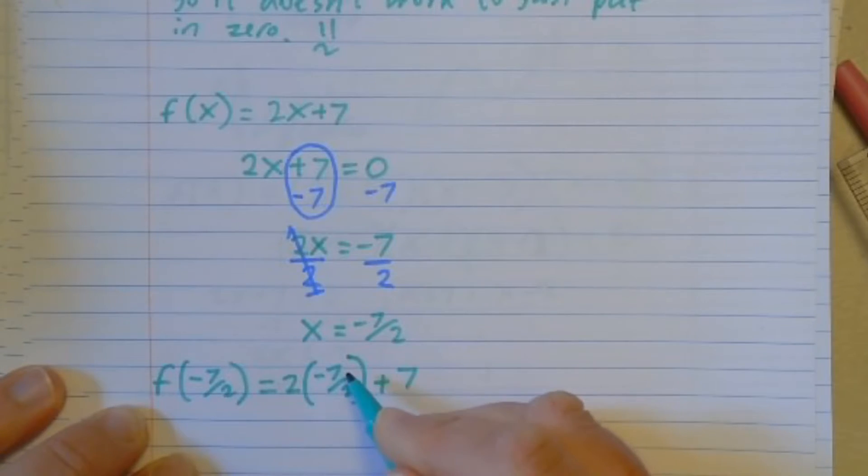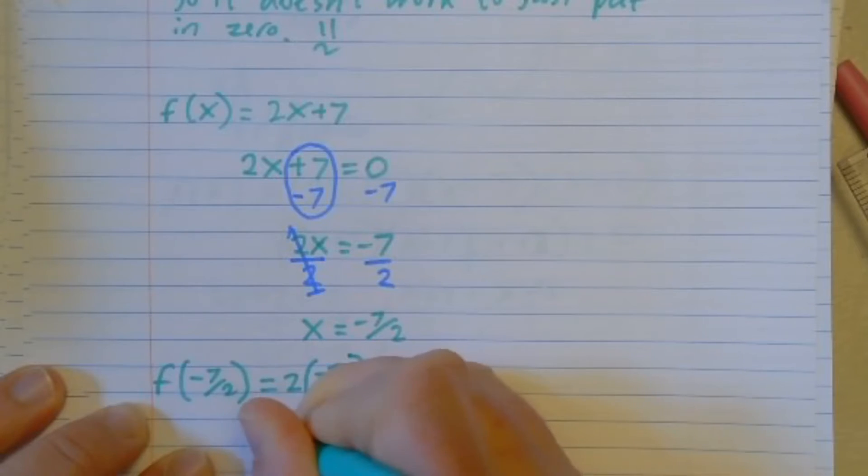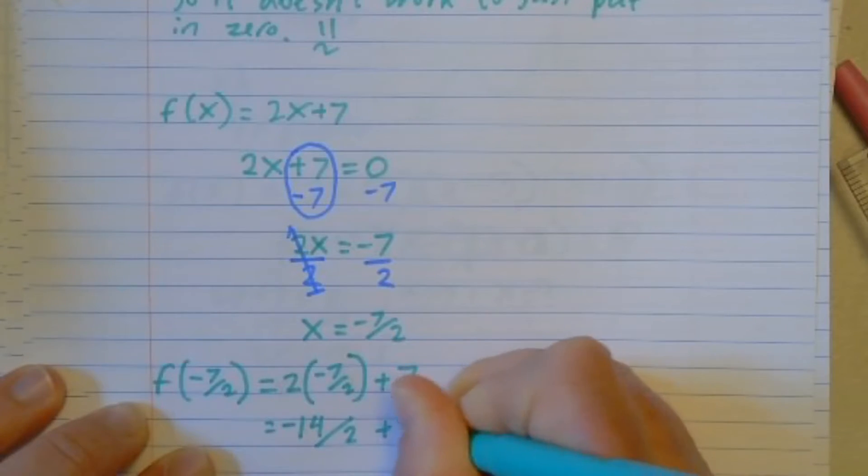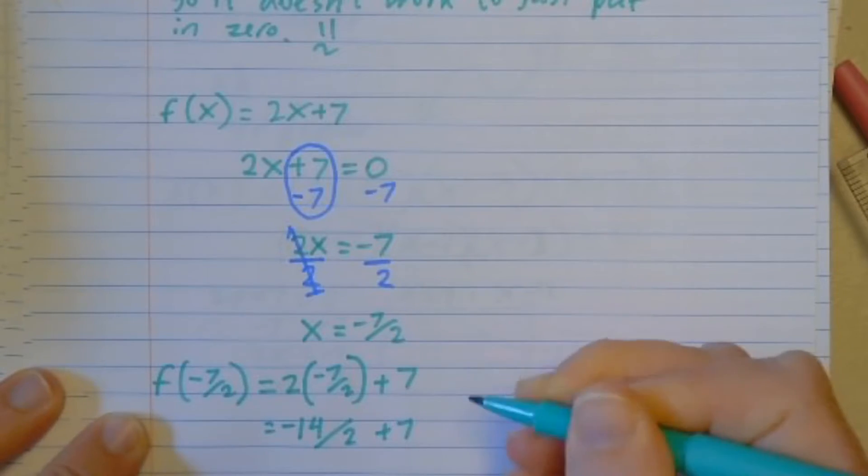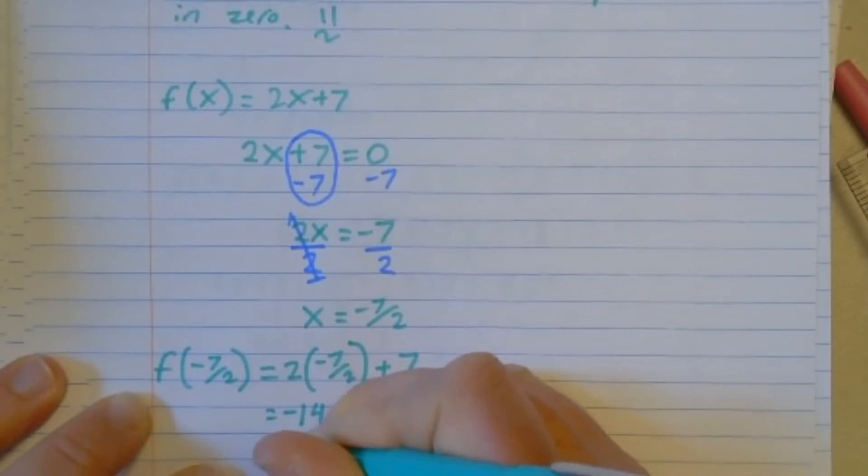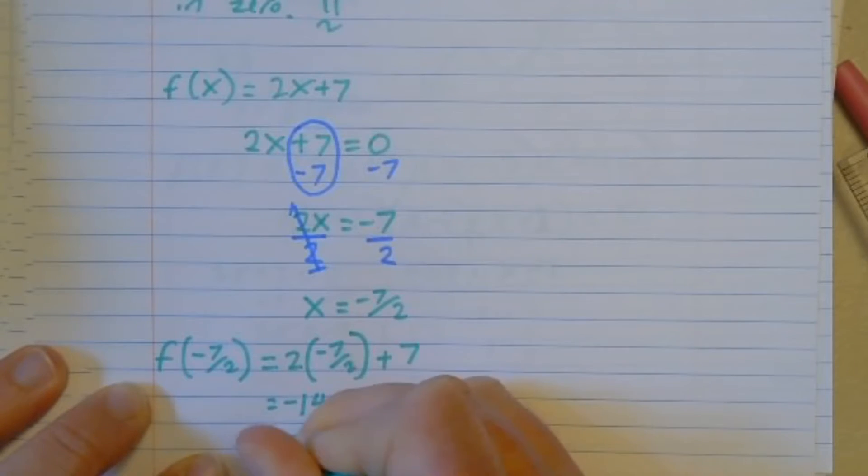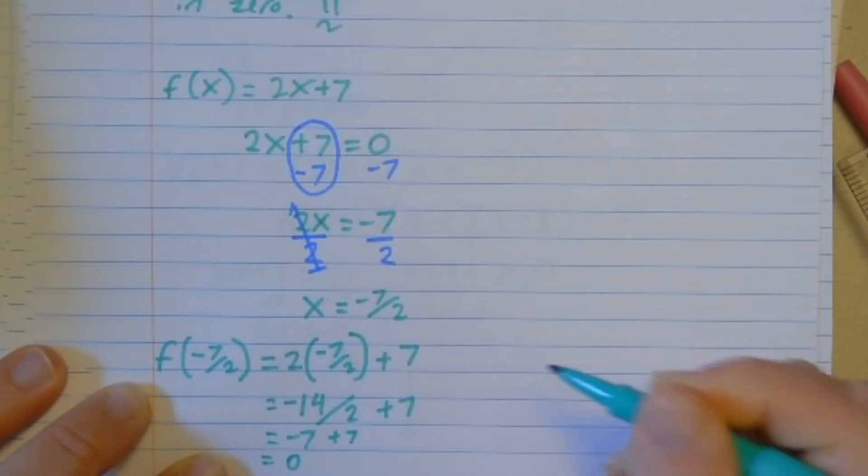2 times negative 7 is negative 14. So I'd have negative 14 over 2 plus 7. Negative 14 over 2 would be negative 7 plus 7. And that would indeed equal 0.